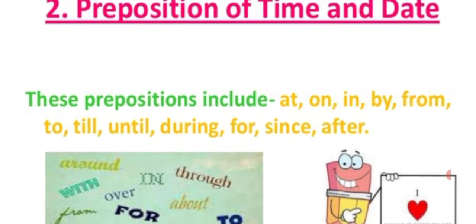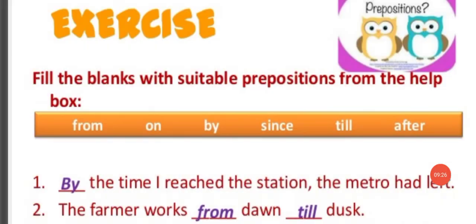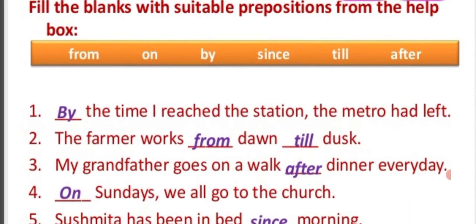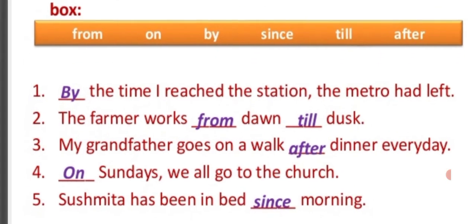Here is an exercise on prepositions of time and date. Fill in the blanks with suitable prepositions from the box: from, on, by, since, till, after. Sentence 1: ___ the time I reached the station, the metro had left — answer: 'by': By the time I reached the station, the metro had left. Sentence 2: The farmer walks ___ dawn ___ dusk — answer: from dawn to dusk.